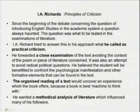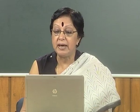So what we are doing now is liberal humanism more or less. Coming to one of Arnold's followers, I.A. Richards — in his Principles of Criticism, what did he give? How did he place the literary critic and the work of art or poetry? Since the beginning of the debate concerning the introduction of English studies in the academic system, a question always haunted: what to be tested in the examinations of literature? I.A. Richards tried to answer this in his approach — what he called 'practical criticism.' He forwarded a close examination of the text, insisting upon close analysis, close examination, or close reading of the text, avoiding the context of the poem concerned. This organized reading of a text would uncover an experience which the book will offer. He wanted a methodical analysis of literature.